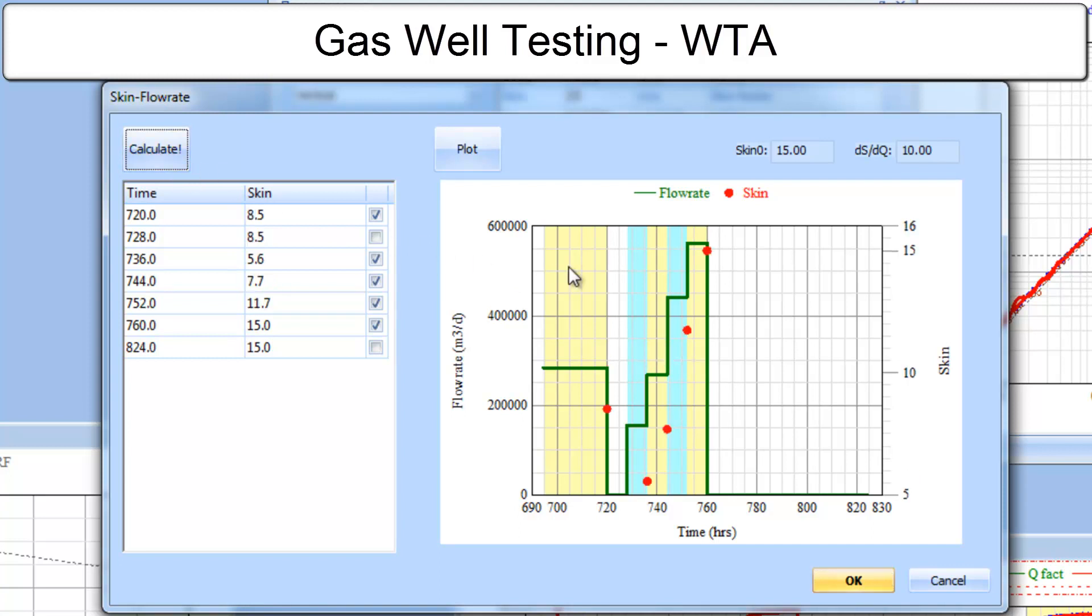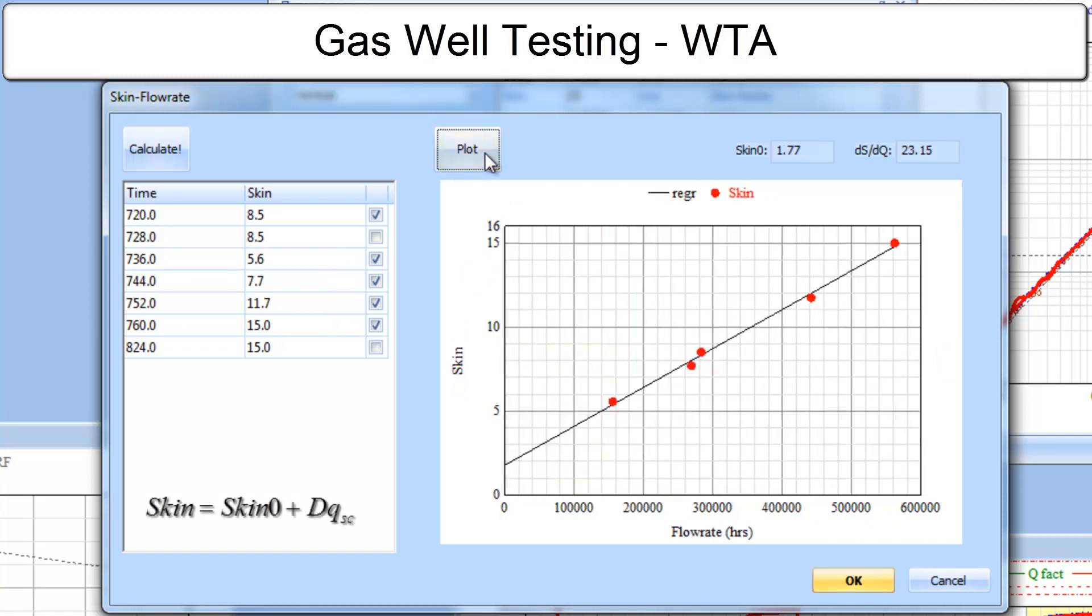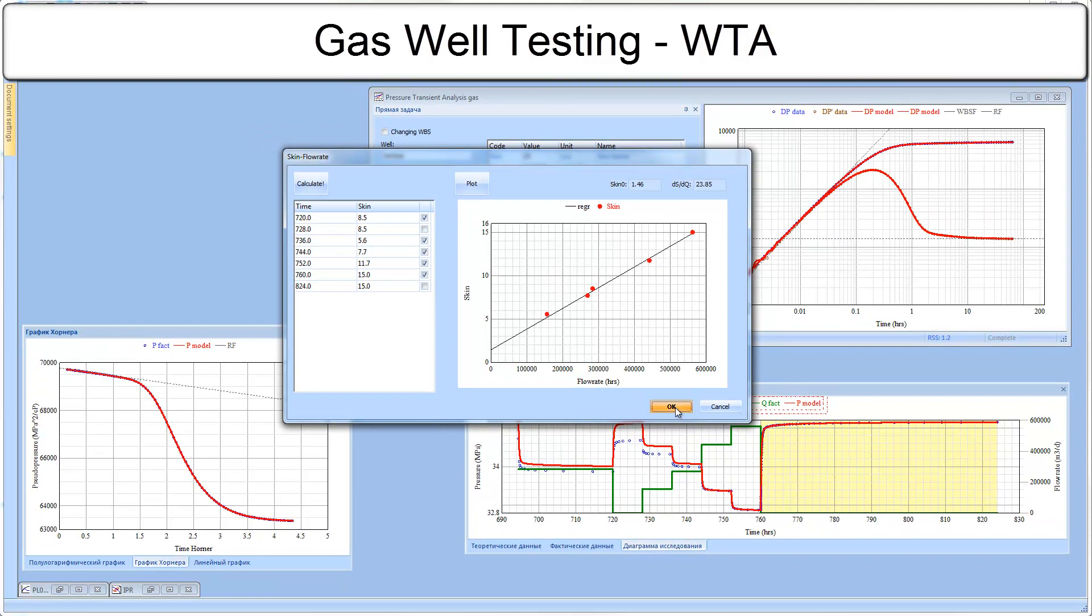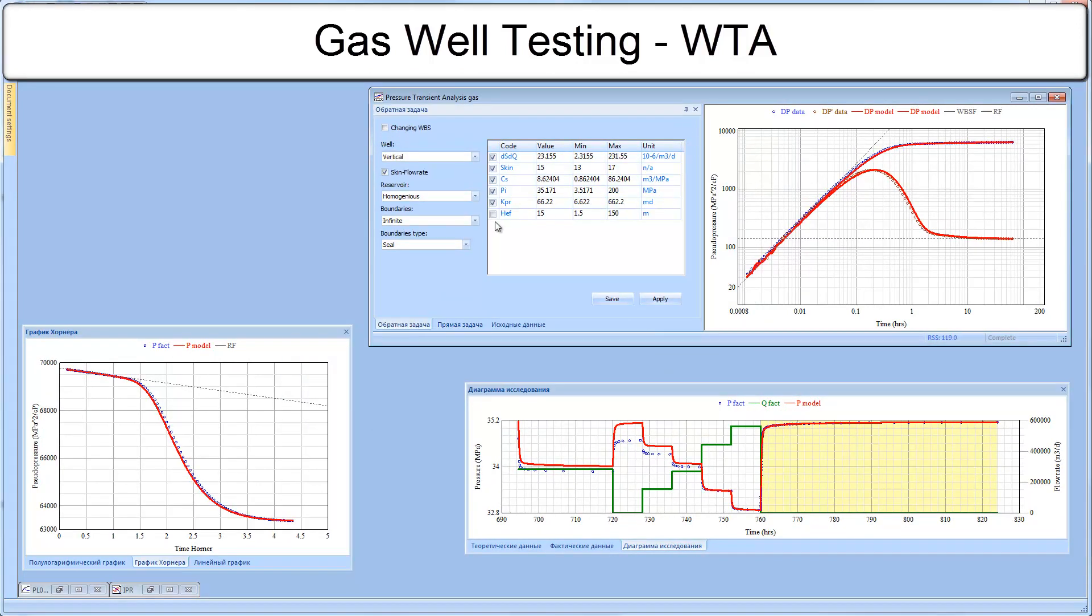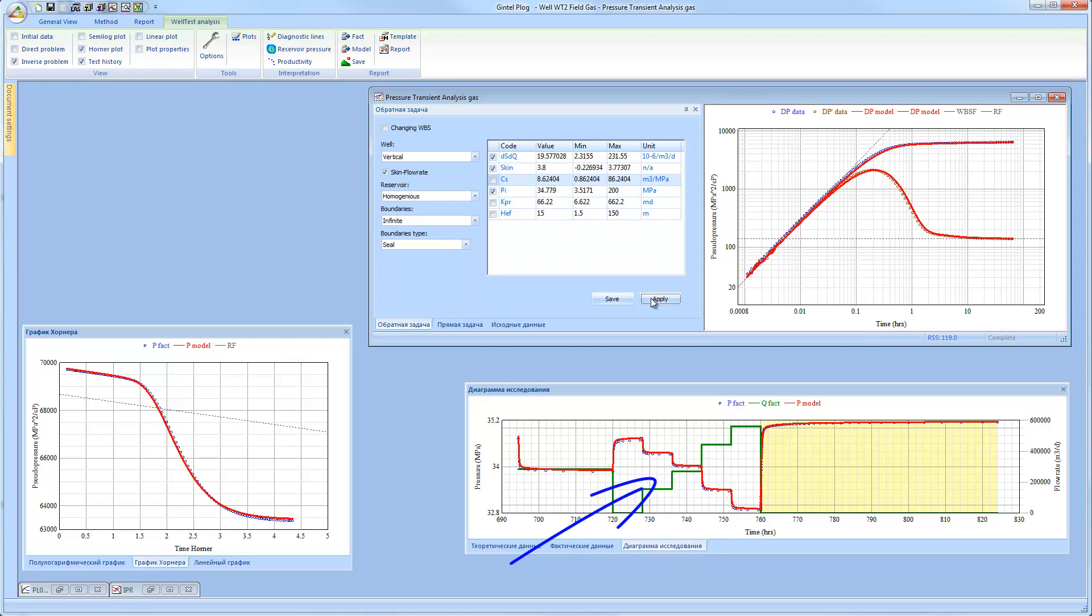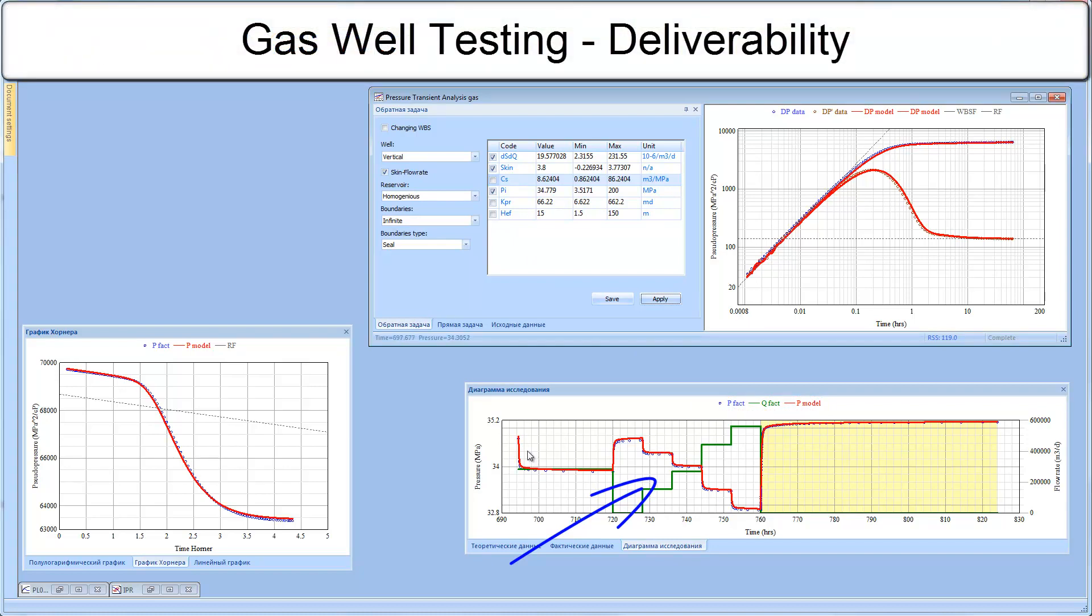To obtain true or mechanical skin factor we have to plot the skin values versus the respective rates. Intersection of the regression line with y-axis will give us the true skin. And slope will give us non-Darcy flow coefficient according to the formula. We can select only the flow periods with consistent skin factor. We then apply rate dependent skin option and try to improve the analytical model. Note that now my analytical model matches the full test history better rather than just buildup period. And I am satisfied with the results.